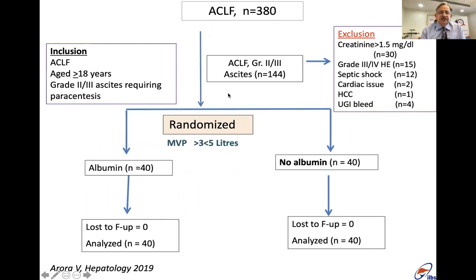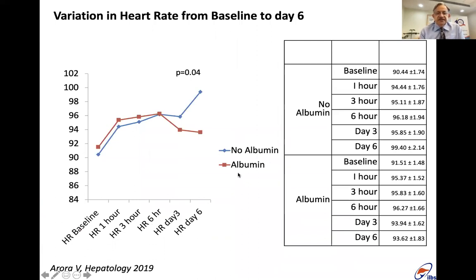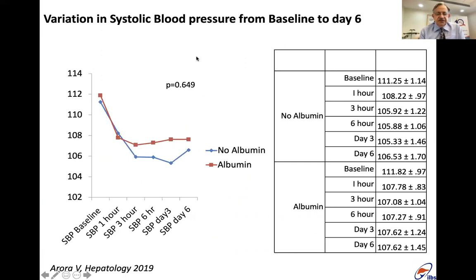A total of 144 patients with grade two or three ascites were enrolled; after inclusion and exclusion criteria, 40 received 20 percent albumin and 40 did not receive any albumin. These patients were sick — high portal pressure with HVPG around 20, low systemic vascular resistance, and high MELD scores in both groups. After tapping, heart rate was followed up to day six. There was an advantage with albumin for heart rate and initially for systolic blood pressure, though the systolic advantage was not maintained at the end of six days.